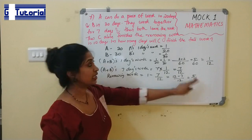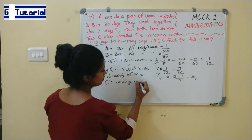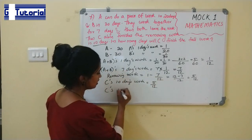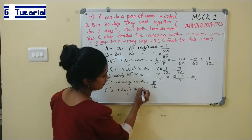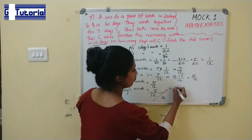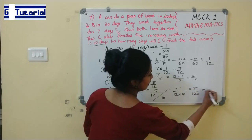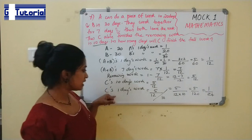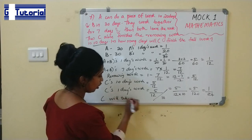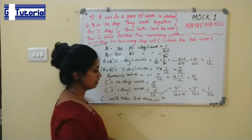C completes this remaining 5/12 of the work in 10 days. So C's 1 day's work = (5/12) ÷ 10 = 5/120 = 1/24. Therefore, C will take 24 days to complete the full work. The answer is 24 days.